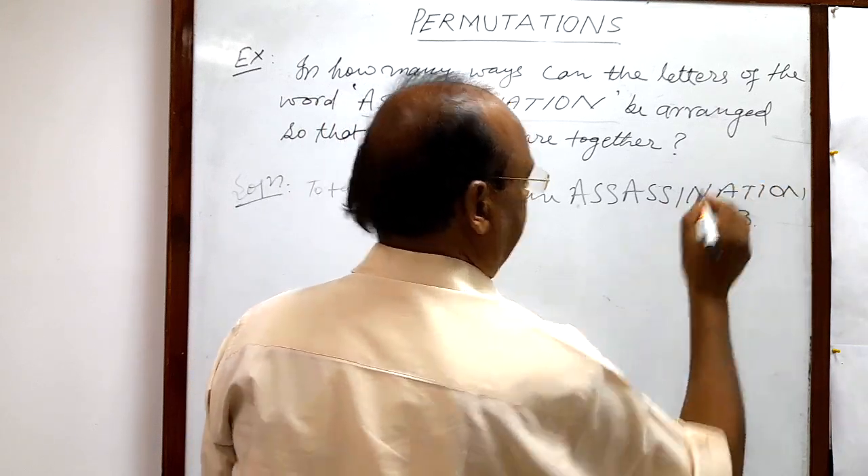Total number of letters in the word assassination is 13. And what is the condition of arrangement? All the S's are together.